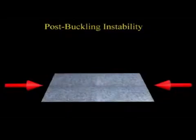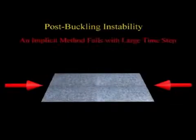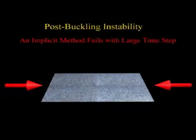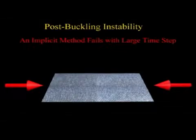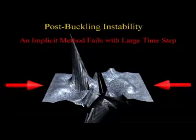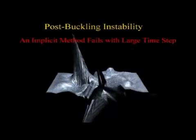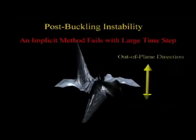Cloth also has a physical instability called post-buckling instability, which cannot be avoided by simply employing an implicit method. This structural instability is related to the out-of-plane motion of cloth particles because cloth buckles in the out-of-plane direction.